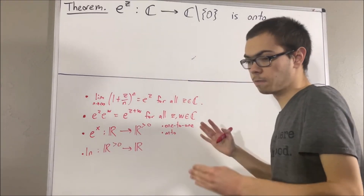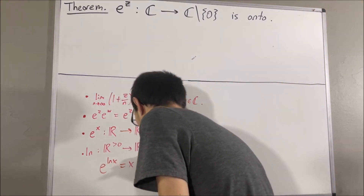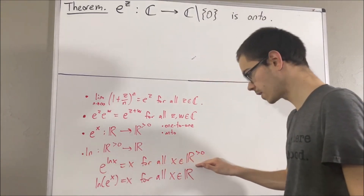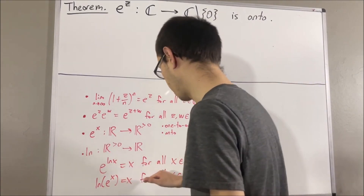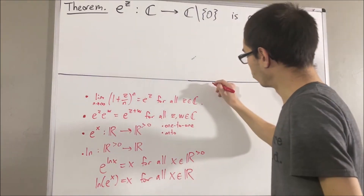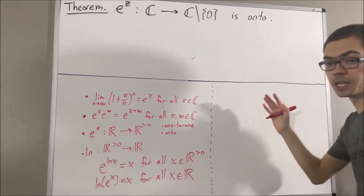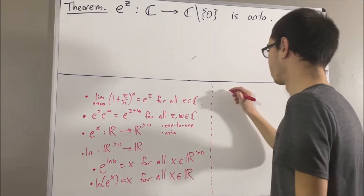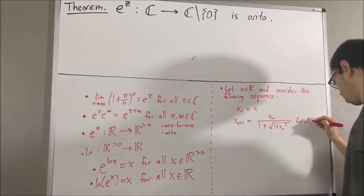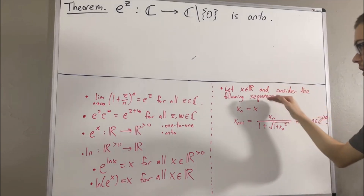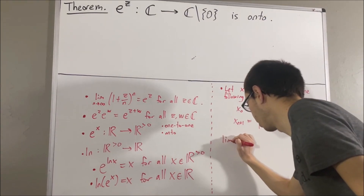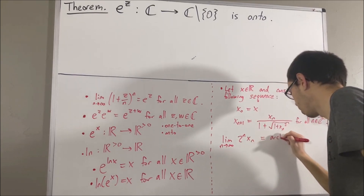By properties of inverse functions, we have: e to the natural log of x equals x for all positive real numbers x, and natural log of e^x equals x for all real numbers x. We also defined the arctangent function: let x be a real number, and consider a certain sequence. It turns out that sequence converges, and we defined the value it converges to as the arctangent of x.